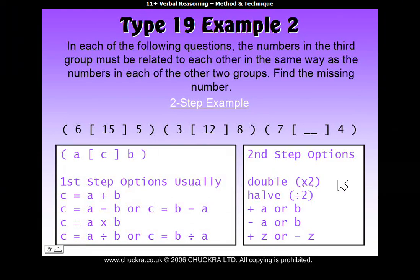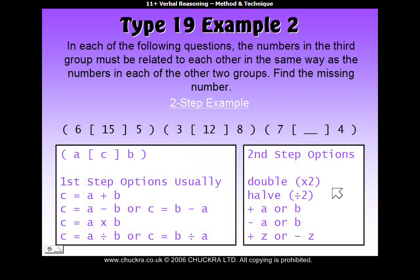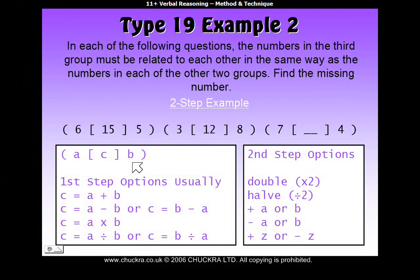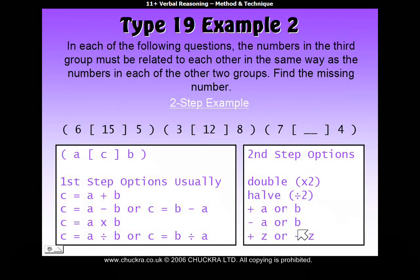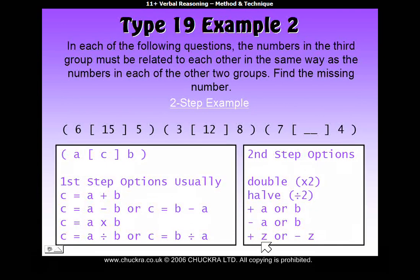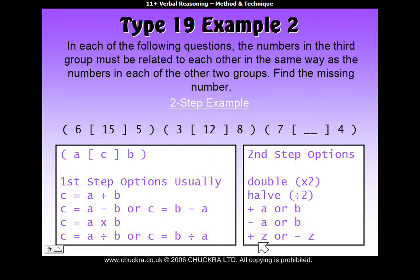The second step often involves either doubling, halving, adding A or B — so adding one of the outside numbers to whatever you got — or subtracting one of those outside numbers. We've used plus Z or minus Z to represent any number. So once you've done your first step, you might have to add or subtract another number on top to reach your middle number.